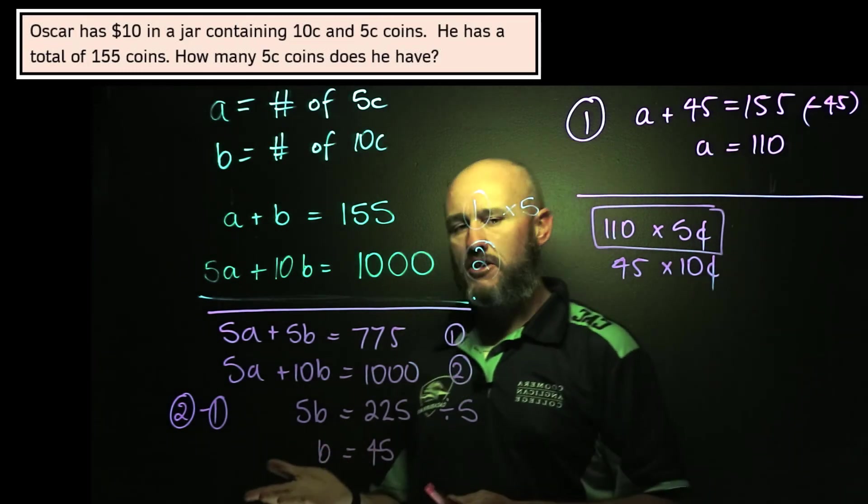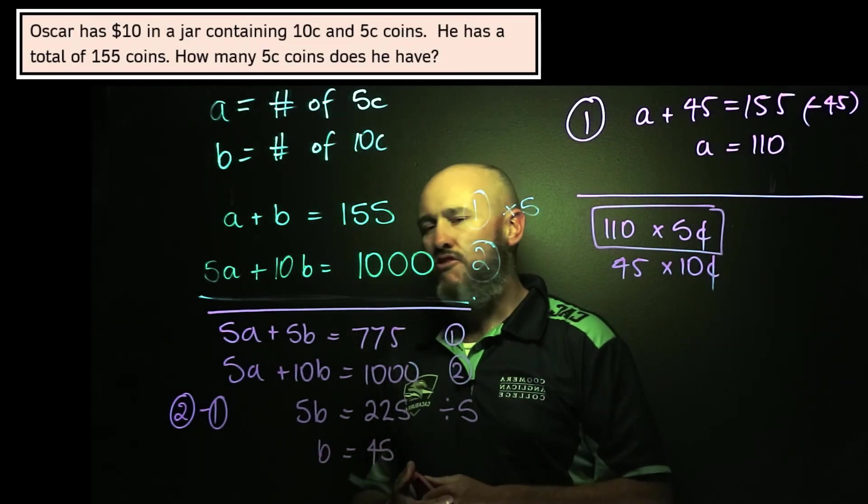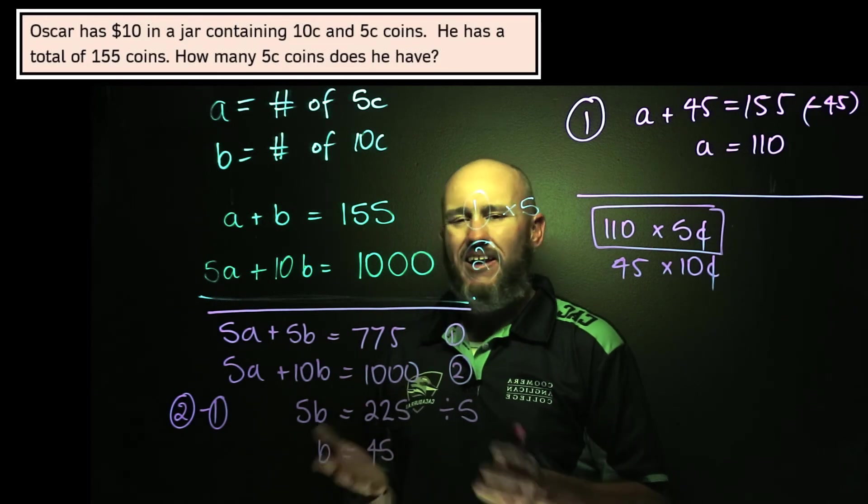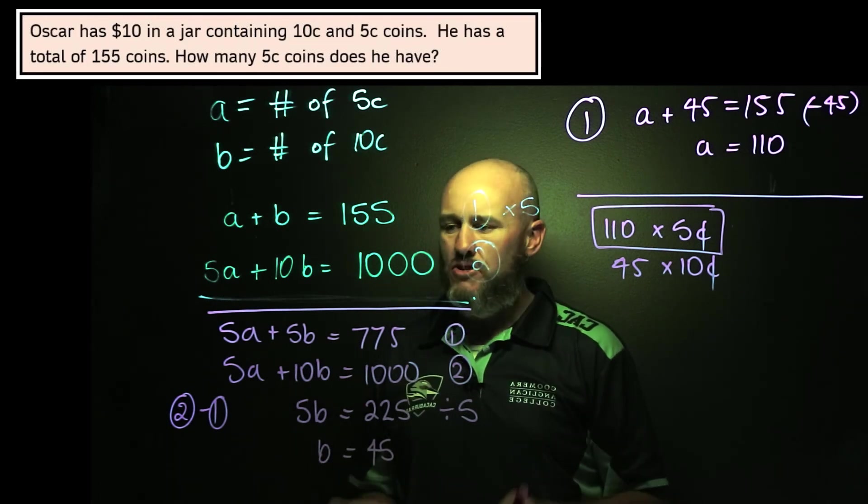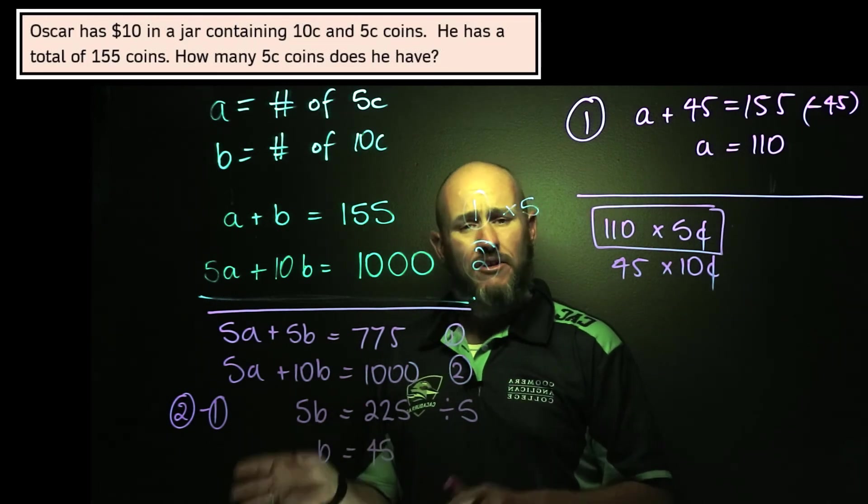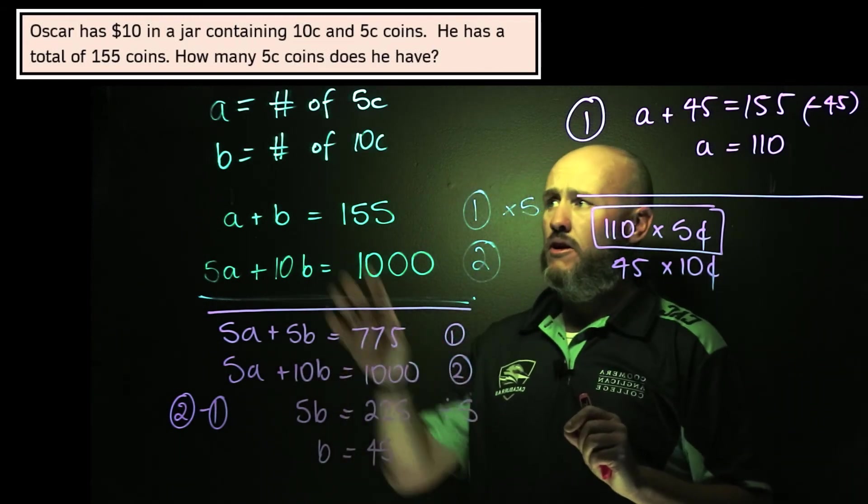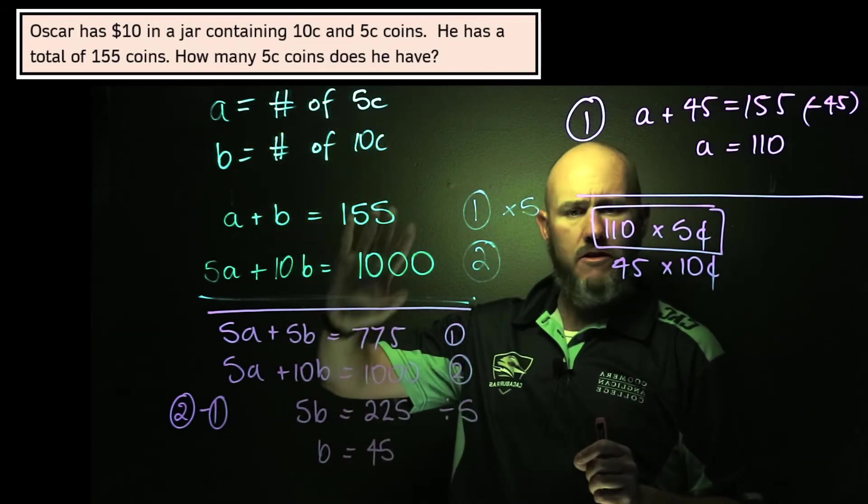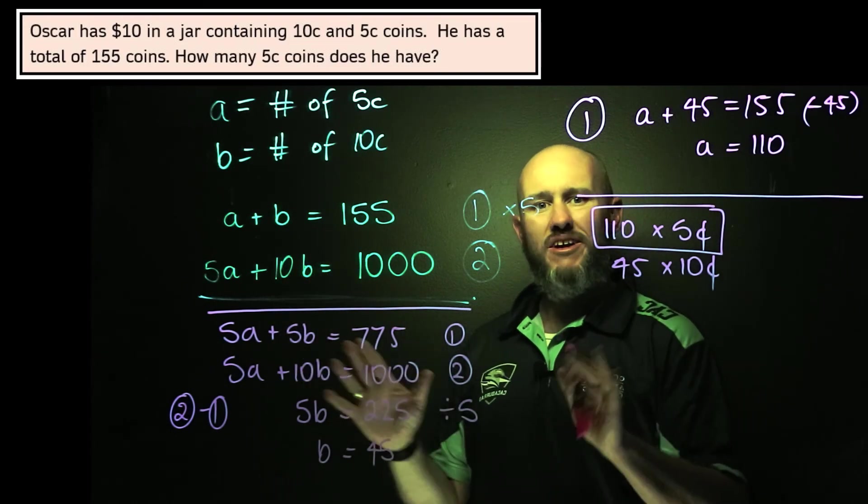So there we have some practical examples of simultaneous equations. They won't really get much harder than that, I don't think. And it doesn't really matter anyway, because any question you get, the context doesn't matter. You just have to be able to pull out the equations, define your variables appropriately, and then use a method to solve. And we're all good. All the best.